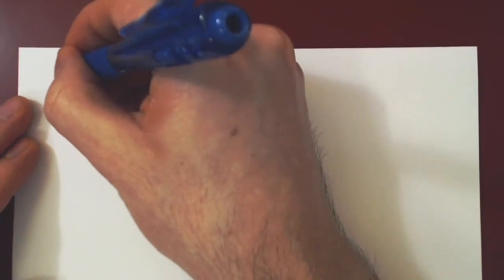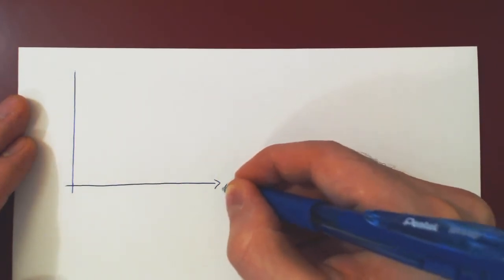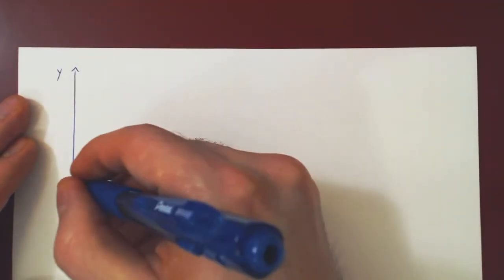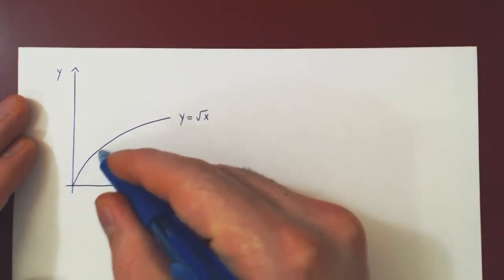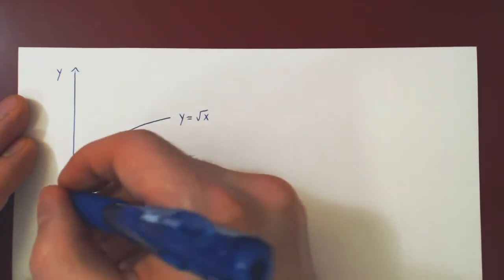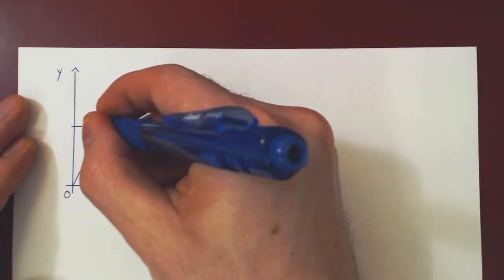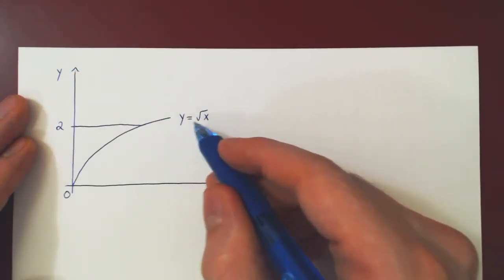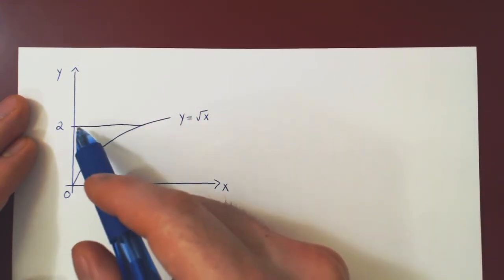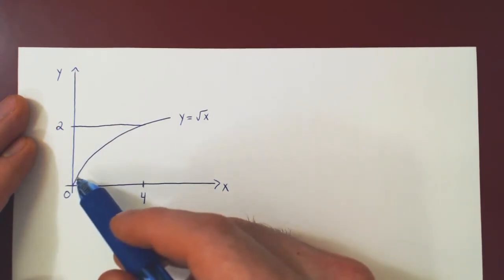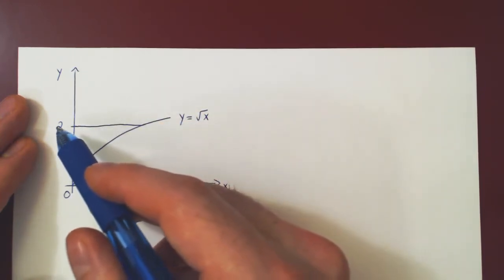Consider the following region. Look at the curve y equals root of x — this will be one boundary of the region. The other boundary will be the y-axis. The third and final boundary will be given by the horizontal line y equals 2. And of course, if y is 2, x must be 4, as the square root of 4 is 2. So we now have a clearly well-defined region in the first quadrant of the xy-plane bounded by y equals root of x, the y-axis (or x equals 0), and the horizontal line y equals 2.